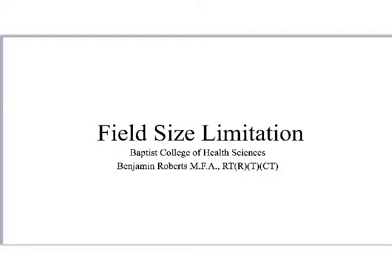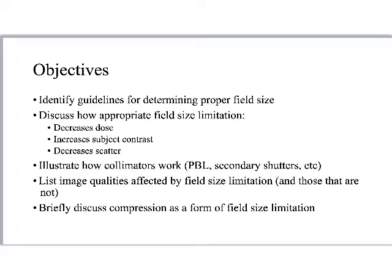Let's talk in-depth about field size limitation in Chapter 18. The learning objectives are: identify guidelines and state them explicitly for determining proper field size, discuss how appropriate field size limitation decreases patient dose as well as potentially technologist dose, increases subject contrast, and decreases scatter.